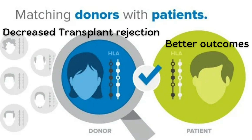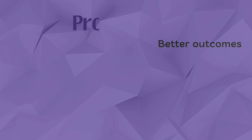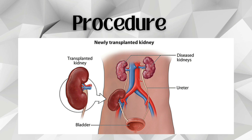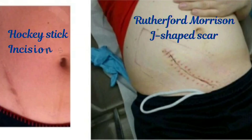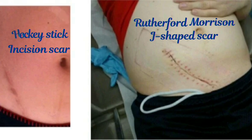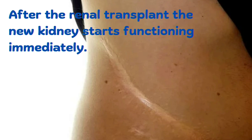Regarding the procedure of renal transplant, the patient's own kidneys are left in place and the donor kidney is usually transplanted in the pelvis in the right iliac fossa. The renal vessels are anastomosed with the pelvic vessels, usually the external iliac vessels, and the ureter is anastomosed directly with the bladder. The donor kidney is readily palpable in the right iliac fossa after transplant. The Rutherford Morrison scar, also known as the hockey stick incision, is used for renal transplant, and the new kidney starts functioning immediately.